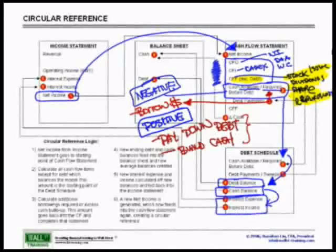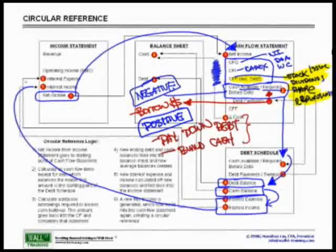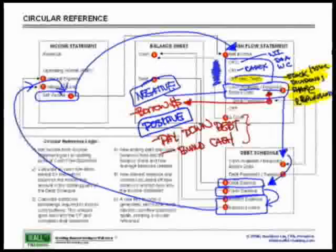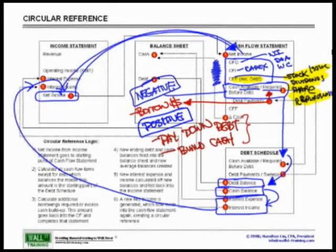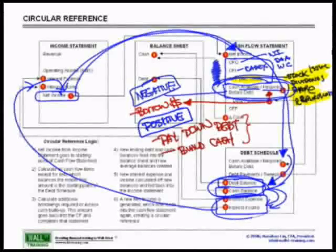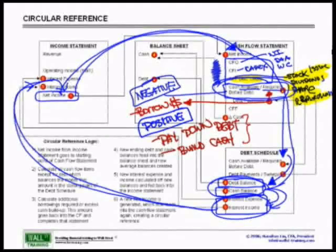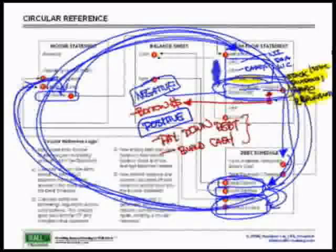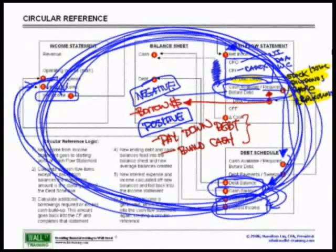This interest expense and this interest income flows to the income statement, which will arrive at a brand new net income number. This brand new net income number flows back into the cash flow statement to calculate again your cash availability or requirement, which then calculates back into your debt suite, gives you a brand new debt balance and cash balance, which then calculate you a brand new interest expense and interest income. Once again, this interest income and interest expense flows back into the income statement to net income, back to the cash statement. Now, hopefully, you can see why you have now created a circular reference.